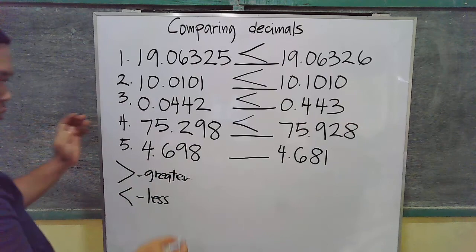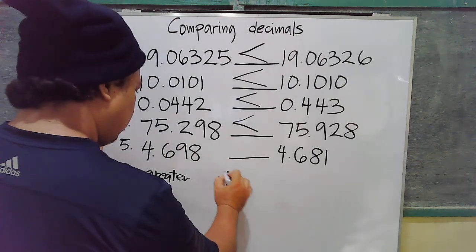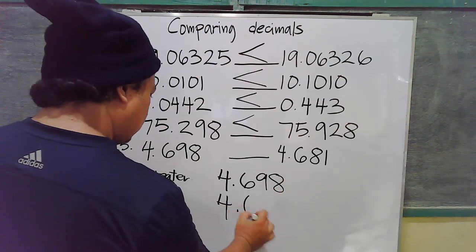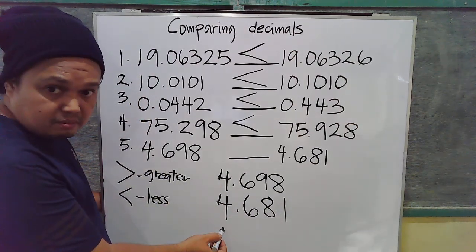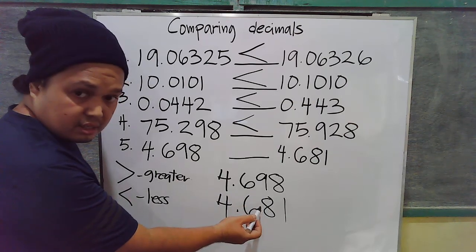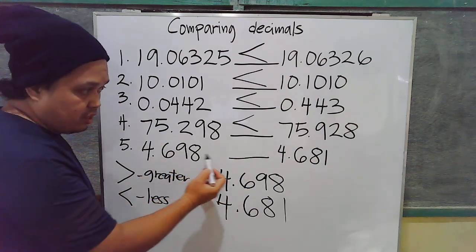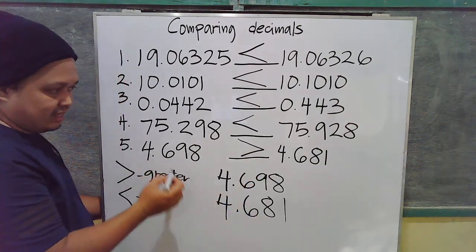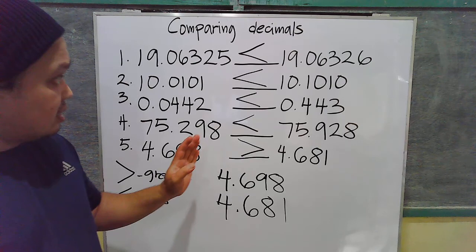Number five: 4.698 compared to 4.681. To answer it easily, let's align them. Now let's compare — 4 and 4 the same; decimal point aligned; 6 and 6 the same. Now 9 here and 8: 9 is greater than 8. So 4.698 is greater than 4.681. That's how you compare decimal numbers.